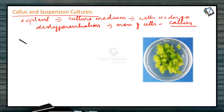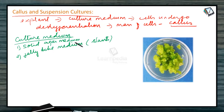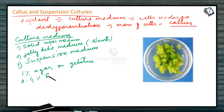Depending on the culture medium, it can be of three kinds. One is solid agar medium, enriched with all nutrients — a jelly-like medium, usually called slants, which can be in a conical flask or a petri dish. The third is liquid medium or liquid broth — this is the suspension medium, used when cells are to be grown as single cells, kept constantly rotating so the cells do not clump up. The semi-solid and solid media are prepared by heating the nutrient medium with less than 1% agar or gelatin. The nutrient solution contains 2 to 4% sugar, vitamins, minerals, and growth regulators. The growth regulators can be replaced by organic complexes like coconut milk, banana pulp, or yeast extract.